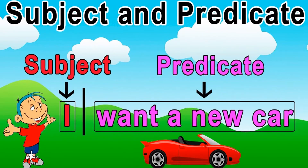Let's read this example. I want a new car. So what is the subject here children? The subject is I. And what is the predicate here? Want a new car.